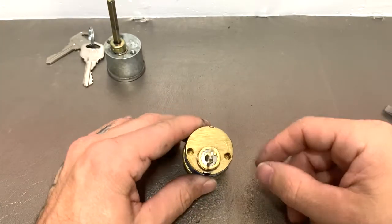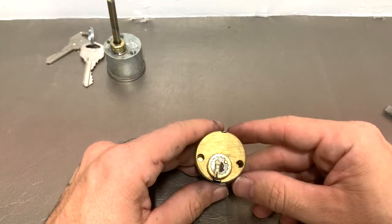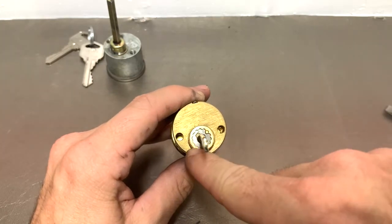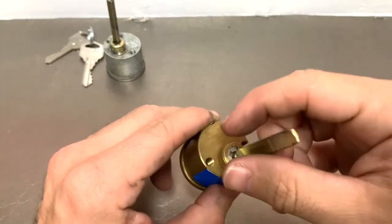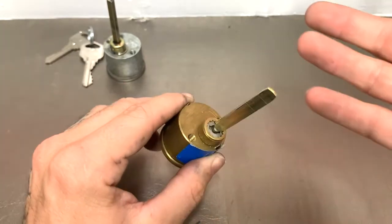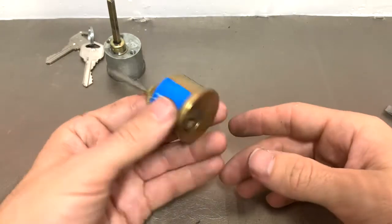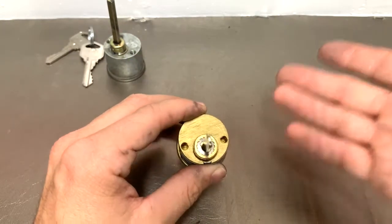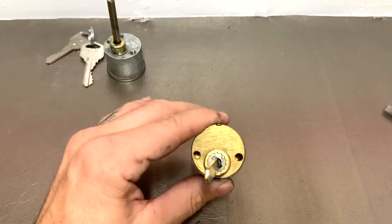They do make a tool that basically mimics the grooves here and it slides over the tailpiece and it pushes in this little pin and you can just unscrew it. If like I said, if you're doing this in the field and you don't have that, or you're trying to do this yourself at home and you're not a locksmith, you just want to rekey your deadbolt.